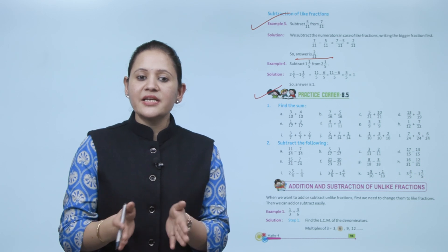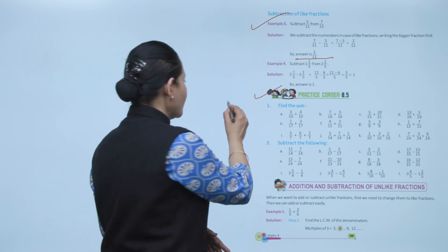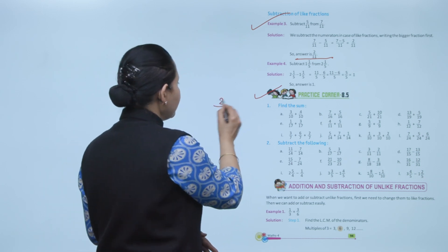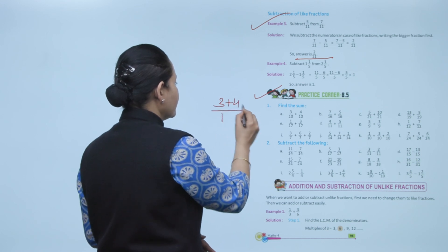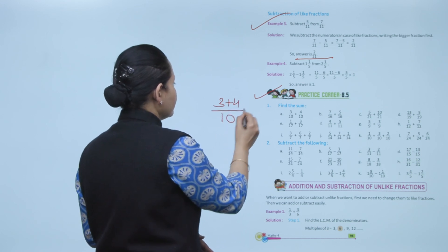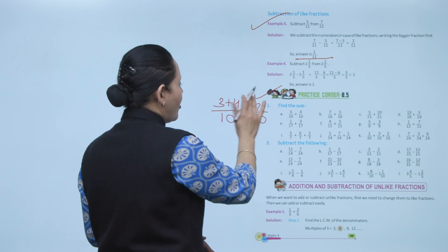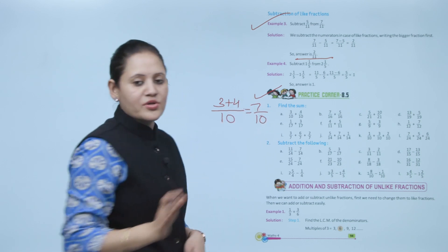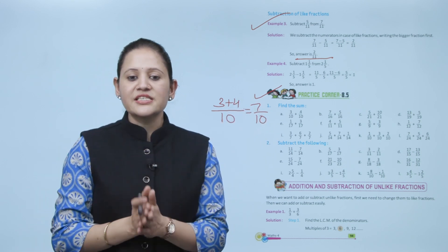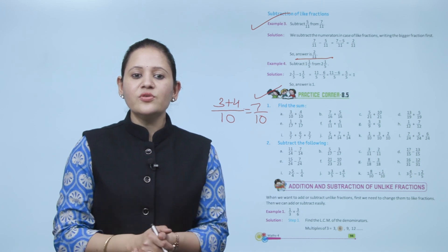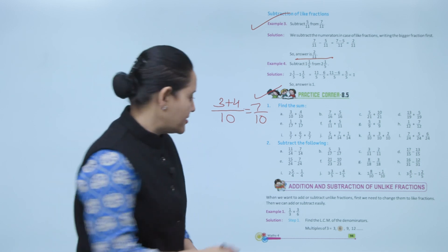Find the sum: 3 by 10 plus 4 by 10. These are like fractions, so add the numerators and write the common denominator: 7 by 10. Always write the answer in lowest form. Practice all the questions of this exercise. Next is addition and subtraction of unlike fractions.